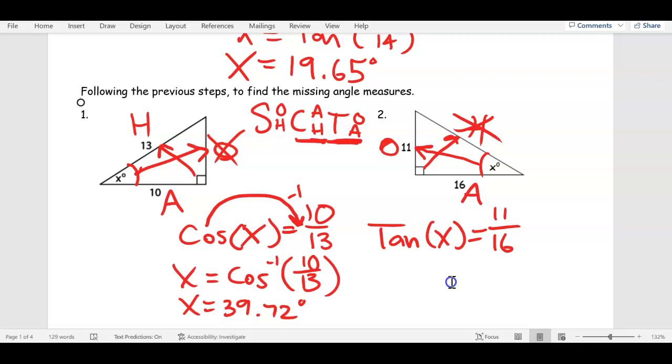X equals O over A. 11 over 16. How do I move that TAN over? What does it become? Little negative 1 means inverse. It becomes an inverse trig problem. Okay. So, I move TAN over here and it becomes inverse. So, I'm going to bring down X equals, TAN is on the left, on the right side, TAN inverse, 11 over 16.